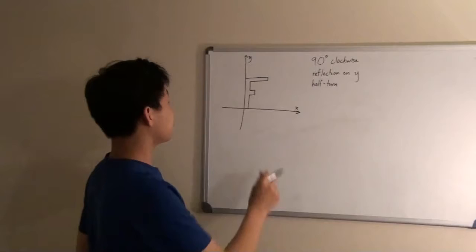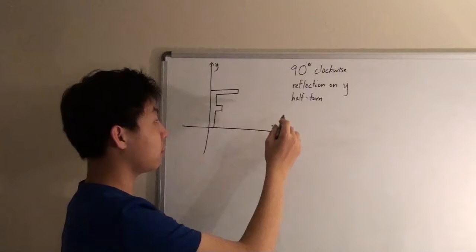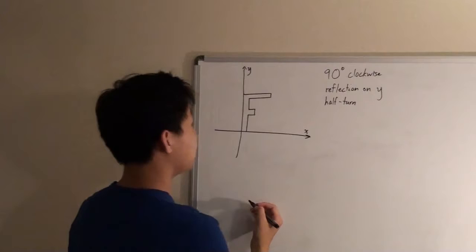For this question, we are given this figure of an F on a coordinate plane, and we are told to rotate it 90 degrees clockwise about the origin, and then reflect it over y, and then make another half turn with it, and then find the final orientation it will be in.